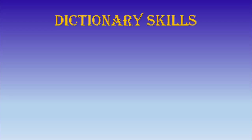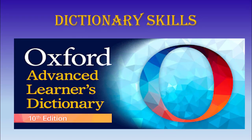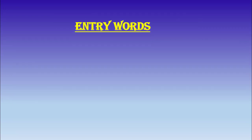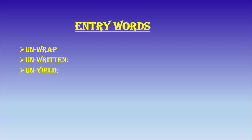We all need a dictionary whenever we have to find the pronunciation, meaning, synonym, antonym, or the origin of a particular word. You all have been using different dictionaries at home and school since your early schooling. I suggest that Oxford Advanced Learner's Dictionary is best for you at this level. When we open a dictionary, we see the words in bold letters. These are called the entry words. We can search any required word easily as they are arranged in alphabetical order.